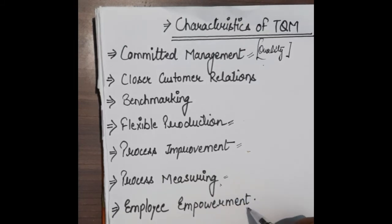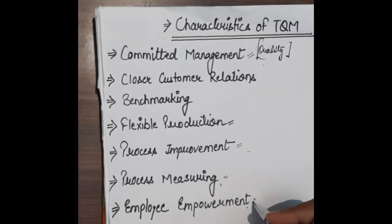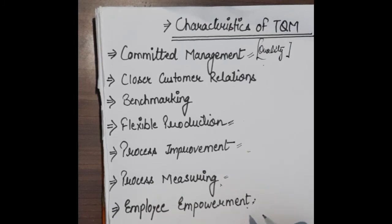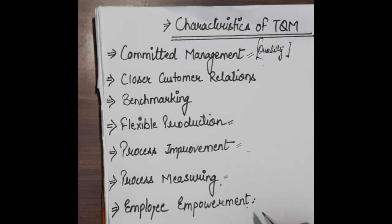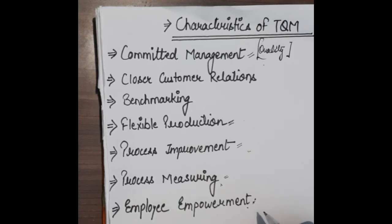Next is employee empowerment. In TQM, employees are empowered — there are no fixed rigid rules or guidelines saying you have to do this specific work. Rather, they need to maintain quality products or quality services, and how they maintain that quality is up to them. Basically, employees get empowerment, skills are enhanced, and capabilities are 100% utilized because targets are flexible and how to achieve them depends on the people. These are the characteristics of total quality management. In the next video, we will discuss the benefits of total quality management.